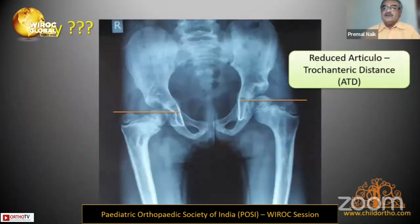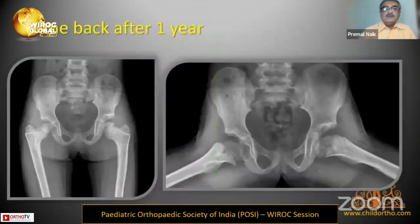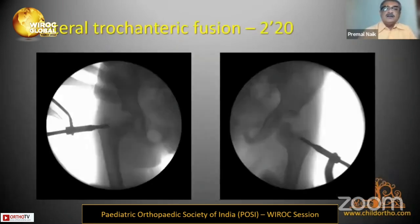Three years later she had excellent range of movements, but X-ray showed reduced articular trochanteric distance, suggesting trochanteric fusion. During this time the mother was pregnant, so she returned after one year. At that point there were articular trochanteric issues and she had bilateral trochanteric fusion in 2020.